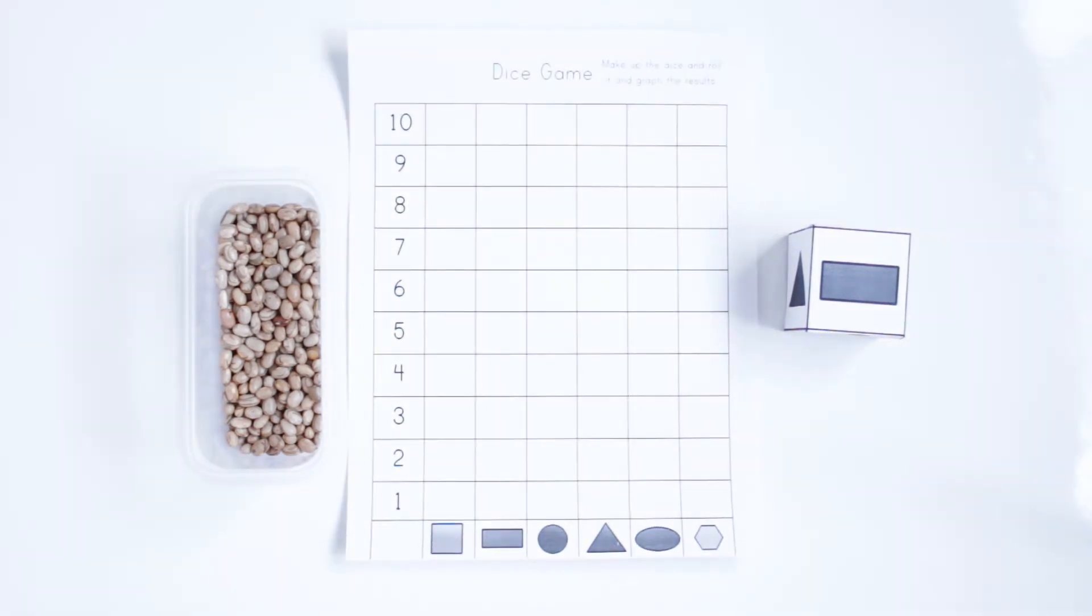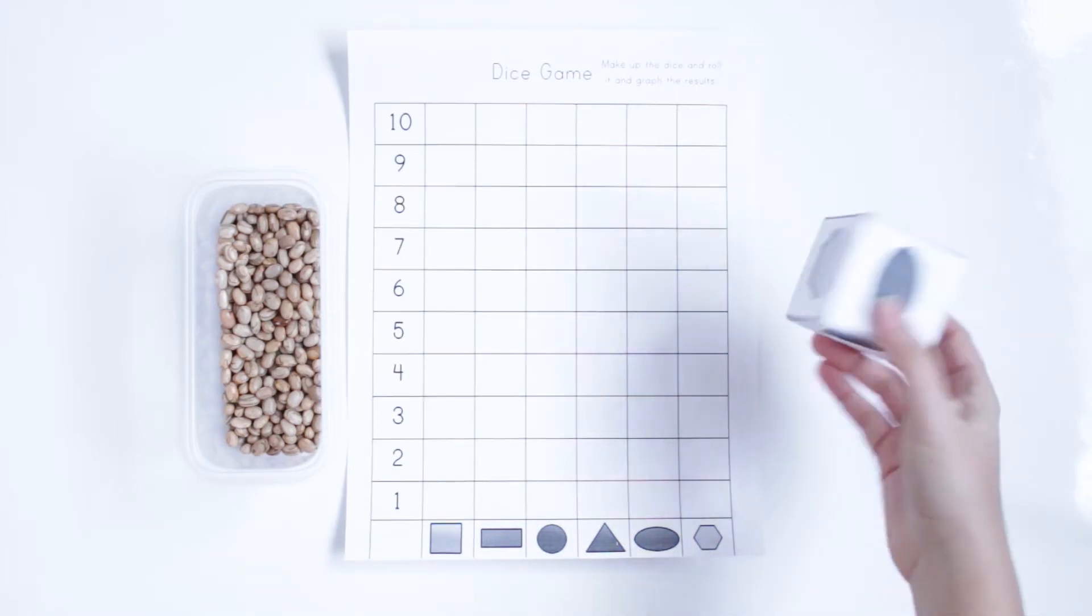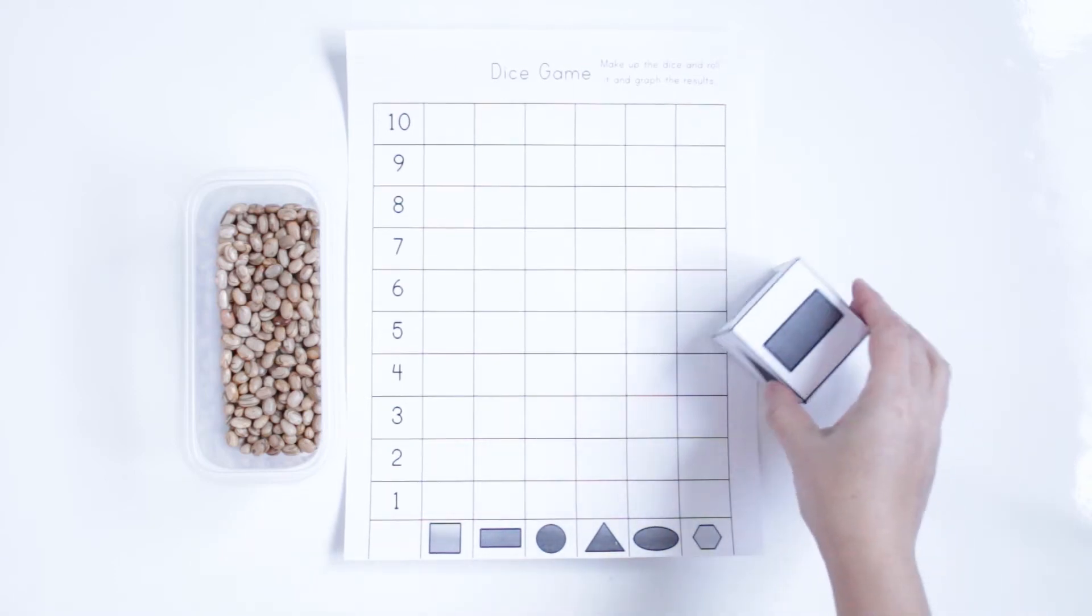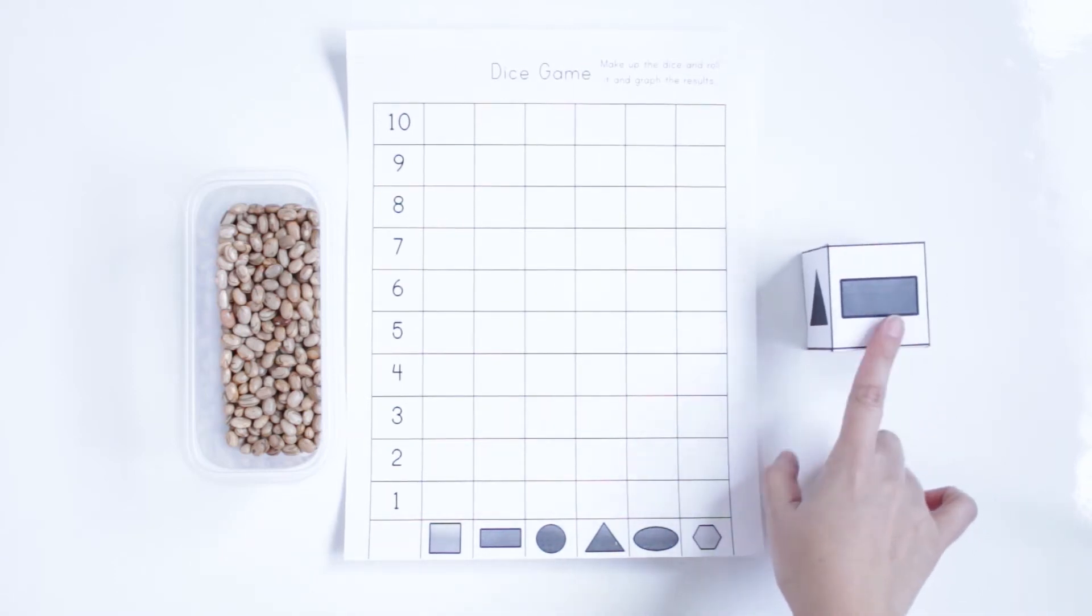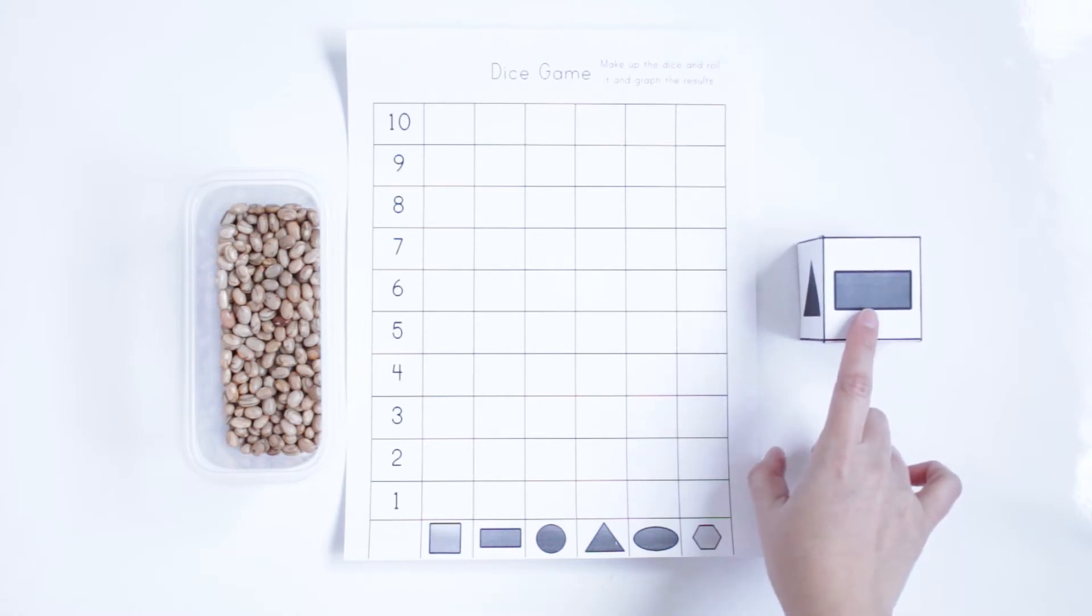So this activity is more like a game. After you have your dice ready, you can just roll the dice like that and see which shape. And you ask the kid to tell you what's the name.